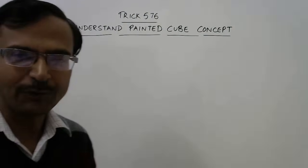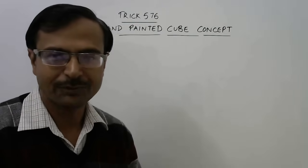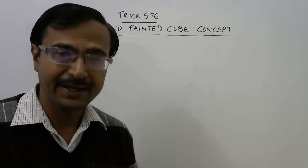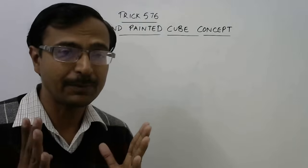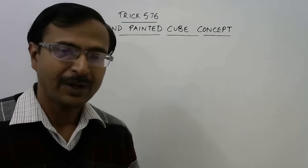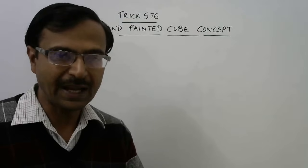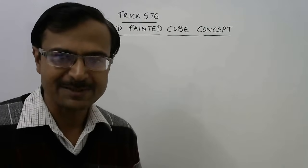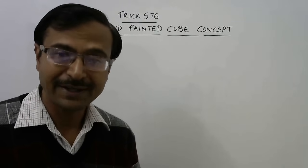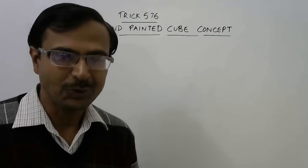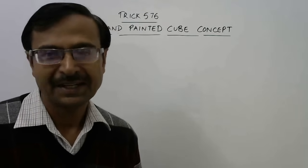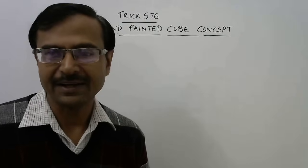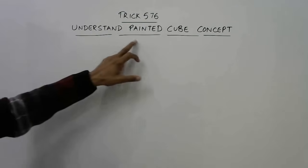Hello friends. In reasoning we often find a particular question of cubes in which a large cube is being painted from all sides and then it is cut into some definite number of cubes. You need to tell how many of the smaller cubes will have one surface painted, two surfaces painted, three surfaces painted, or no surfaces painted. If you know the shortcut, you can solve this problem in one or two seconds. Let us understand this concept of painted cube.